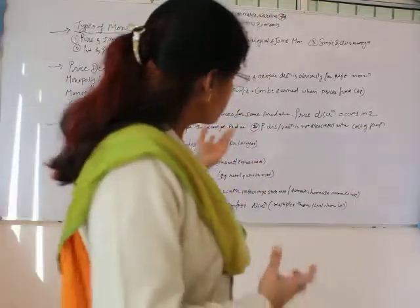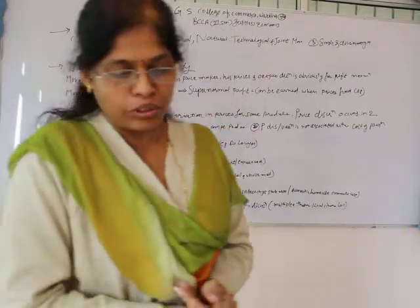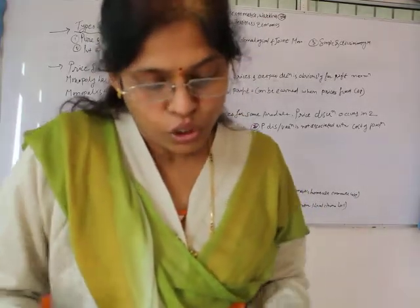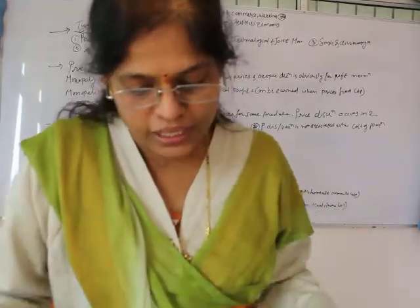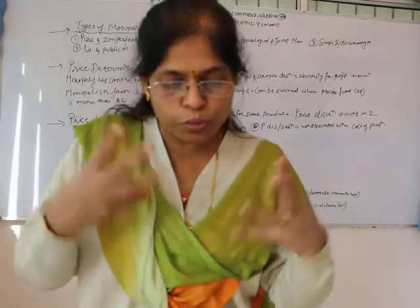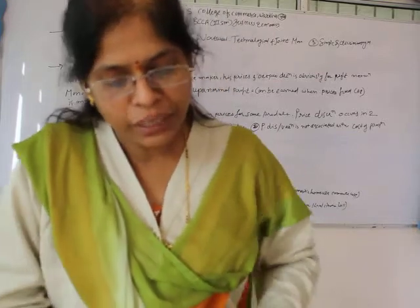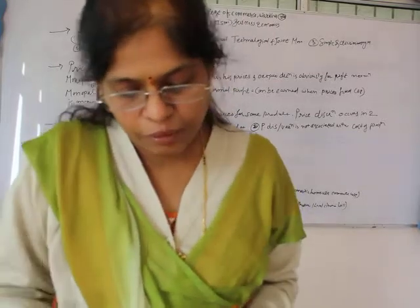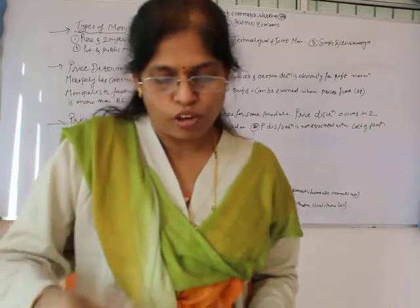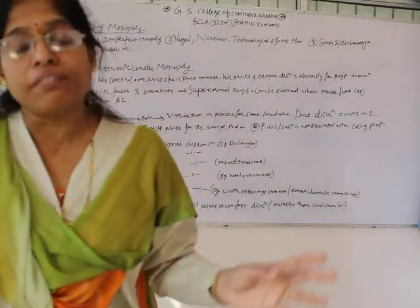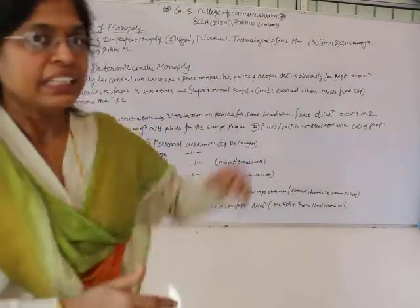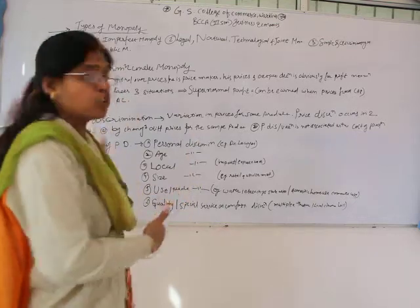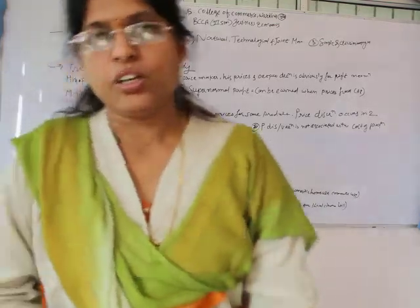Simple and discriminating monopoly: a simple monopoly firm charges uniform prices for its product, whereas a discriminating monopoly firm charges different prices for the same product to different buyers. This concept will be seen in the next topic — price discrimination.